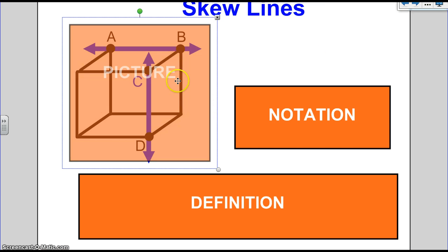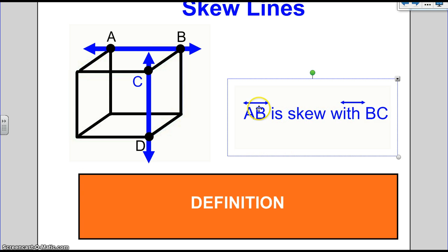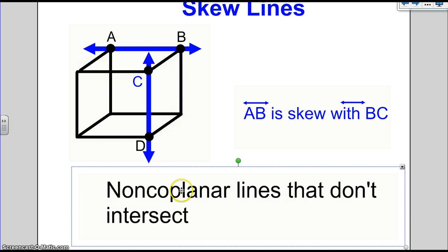Skew lines. This is a picture of skew lines. What do you notice? This is the notation. Line AB is skew with BC. The definition is they are non-coplanar lines that don't intersect. So AB is not in the same plane as CD. If it were, it would be right here. So you notice that CD is in this plane and it doesn't intersect with AB.